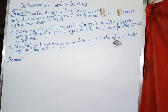Let R be the distance from the center to a side. In question B, we are asked to find the magnetic field at the center of a regular n-sided polygon carrying a steady current I. Again, let R be the distance from the center to any side.